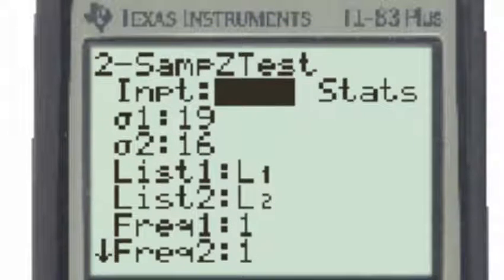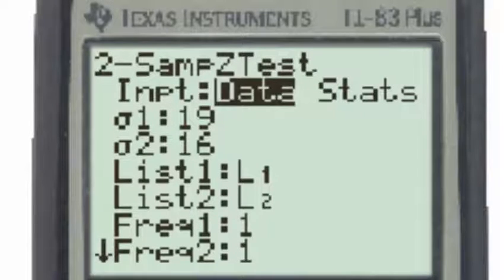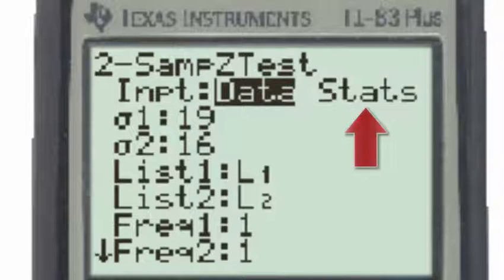Under the two-sample z-test, the input is not in the form of a data list, but is instead in the form of summary statistics, so we will select stats.